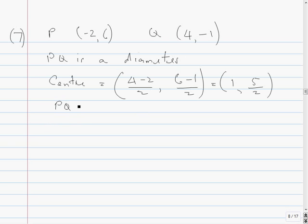So the length of PQ is equal to the square root. The difference between the X's, which is 4 minus minus 2 squared, plus the difference between the Y's, which is minus 1 minus 6 squared, which equals 4 minus minus 2 is 6, so it's 36. That's minus 7, so it's 49, which equals the square root of 85, root 85.